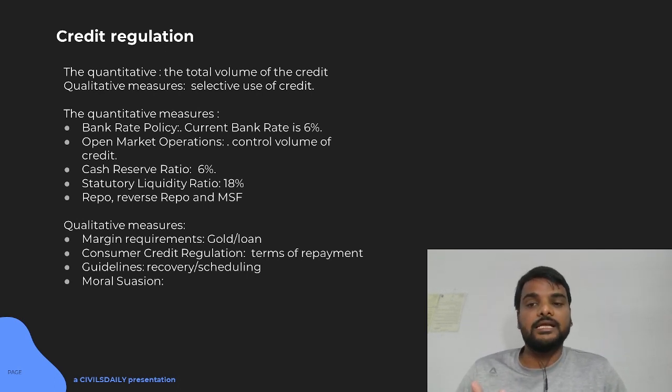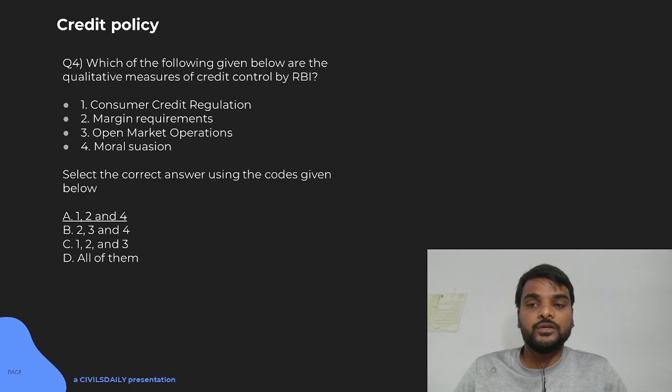Fourth is moral suasion. It is a factor where RBI warns banks and financial institutions to not give excessive credit to certain areas or certain types of consumers like real estate. What are guidelines to be internally followed? How their credit worthiness will be checked? All these guidelines come into the moral suasion. So, 1, 2 and 4 will be true here. Your answer: 1, 2 and 4 will be true.